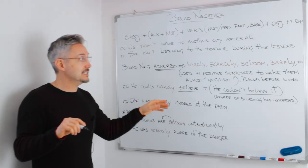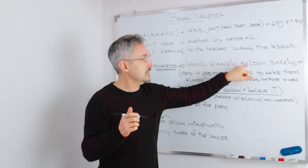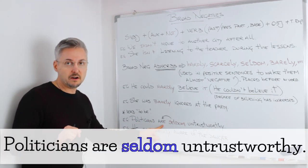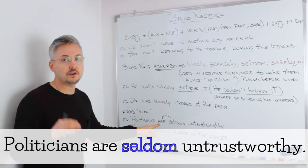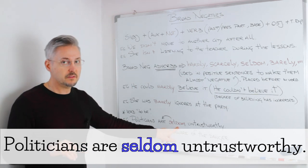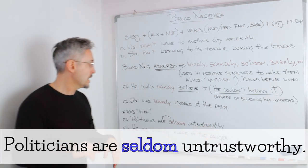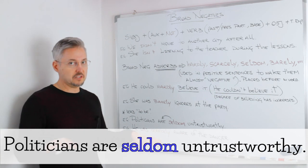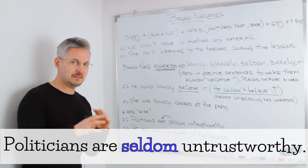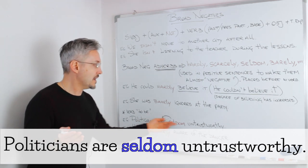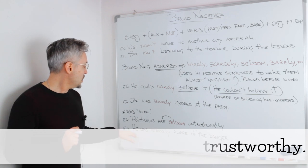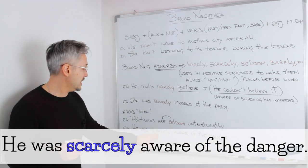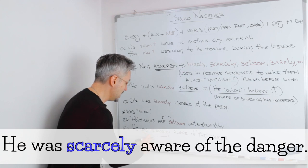So with the verb 'to be', as I said, the adverbs 'hardly', 'scarcely', 'seldom', 'barely' are placed right after. For example, 'politicians are' — the verb 'to be' 'are', so in this case it's the third person plural — 'politicians are seldom untrustworthy'. So if I said 'politicians aren't untrustworthy', that means they are not — a hundred percent. In this case we have 'seldom', and that means they are more or less trustworthy. Another example: he was scarcely aware of the danger. Again, 'scarcely' is after the verb 'to be', as you can see.